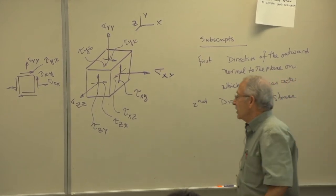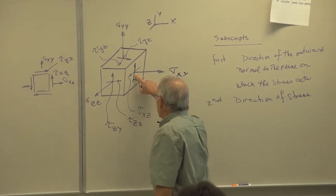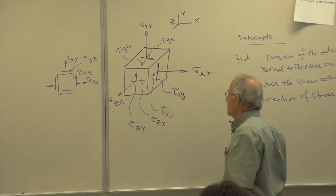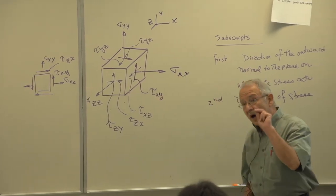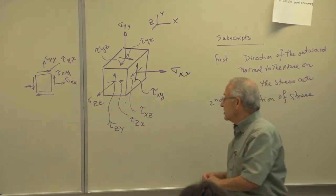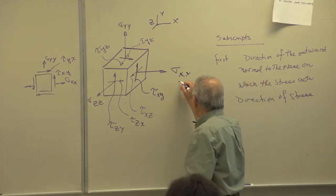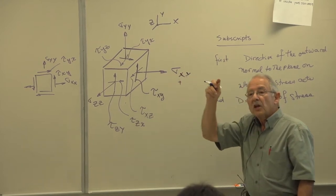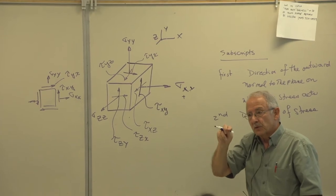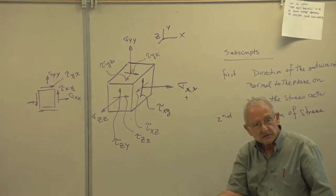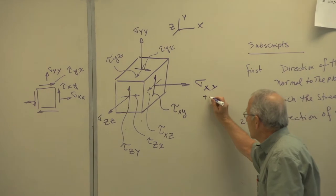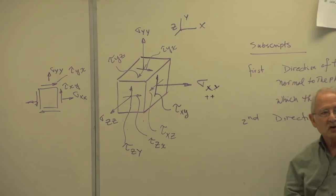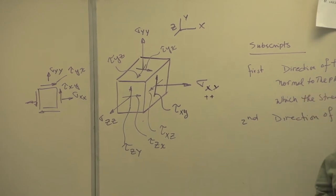That's how this notation works. If the outward normal to the plane on which the stress acts is in the positive direction of the X axis, we call that subscript positive. For the second subscript, if it is in the positive direction of the axis, we call it positive. The product of those two signs gives you the sign of the stress — in this case positive times positive gives positive, therefore this is a tensile stress.